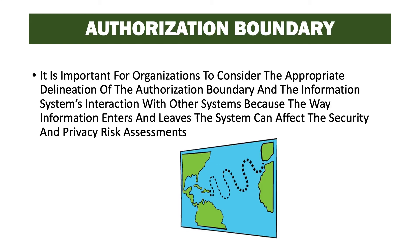It's important for organizations to consider the appropriate delineation of the authorization boundary and the information system's interaction with other systems, because the way information enters and leaves the system can affect the security and privacy risk assessments. We want to determine how information comes into the system, how it's processed, and how it leaves the system so that we know where in our system that information is flowing and where to best provide the controls that can protect the information at the level it needs to be protected.